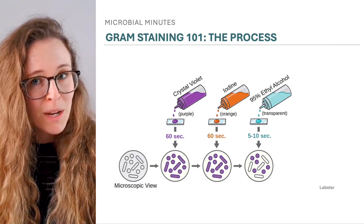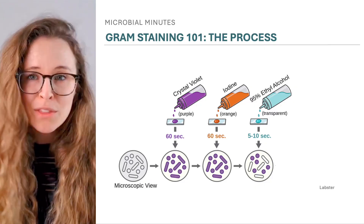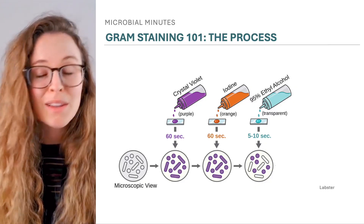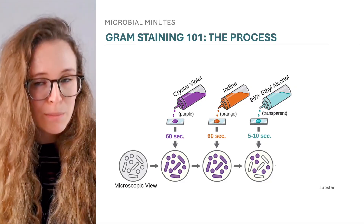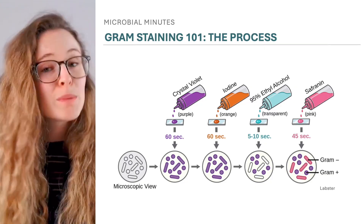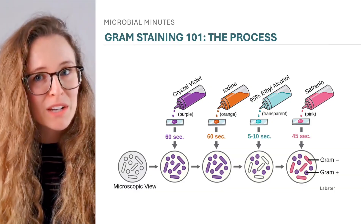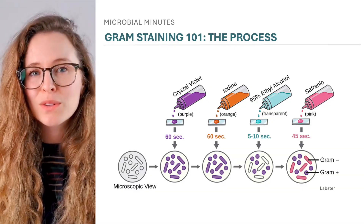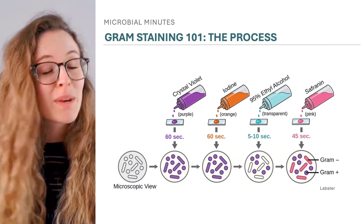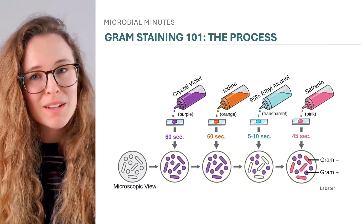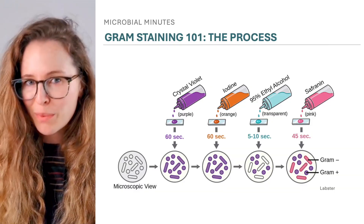In gram-negative bacteria, however, ethanol dissolves their outer lipid membrane, allowing the dye to seep out. Treatment with a counter stain turns the now colorless gram-negatives pink, while the gram-positives remain purple.